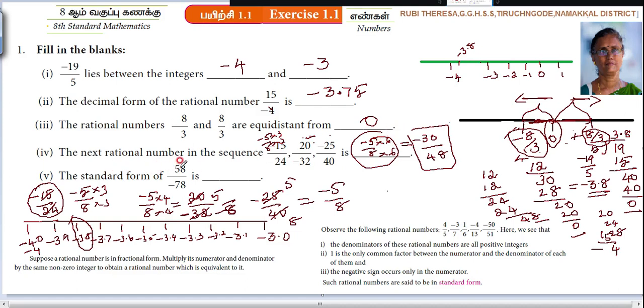The standard form of 58 by minus 78 is blank. What is mean by standard form? Just you see here. Observe the following rational numbers. Here we see that there are 3 conditions it satisfies. The denominators of these rational numbers are all positive integers. 1 is the only common factor between the numerator and denominator of each of them. The negative sign occurs only in the numerator. That means what, the reduced form. It should be given in the reduced form. But the negative sign, it is better to write in the numerator.